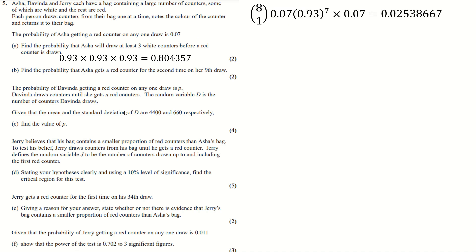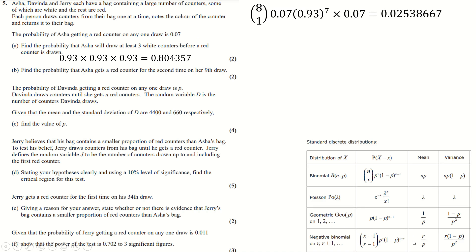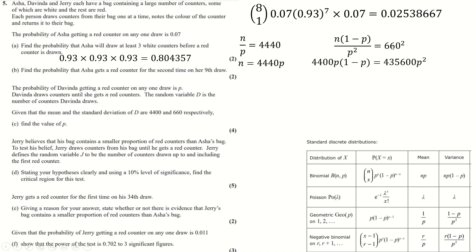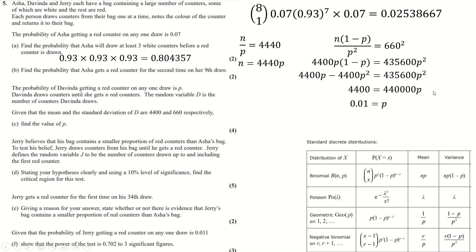Davinda draws until she gets n red counters — this is a negative binomial distribution. The formula book gives mean = r/p and variance = r(1−p)/p². Replacing r with n, we have n/p = given mean. We also know the variance. Since standard deviation is the square root of variance, squaring the standard deviation gives the variance. Substituting the expression for n/p into the variance equation and simplifying by cancelling p (since p ≠ 0) gives the value of p.